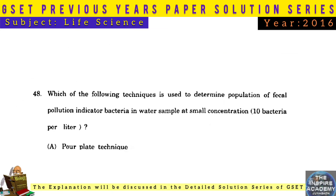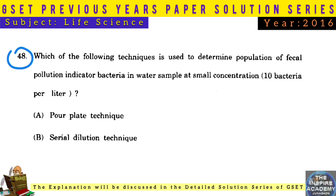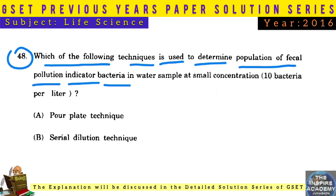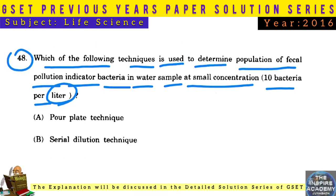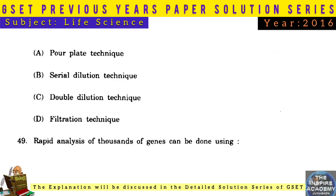Question No. 48: Which of the following techniques is used to determine the population of fecal pollution indicator bacteria in a water sample at small concentrations, i.e., 10 bacteria per liter? Answer: Membrane filtration technique.